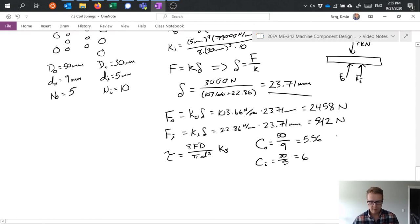And then we have from that K_outer equals 1 plus 0.5 over 5.56, which equals 1.09. And K_S inner equals 1 plus 0.5 over 6, which equals roughly 1.08. Great. So I've got those values. Now I can plug everything in.